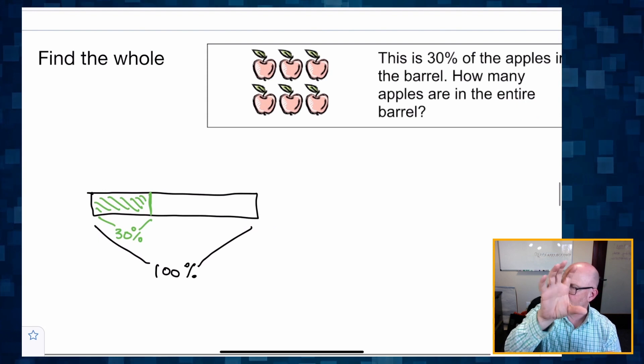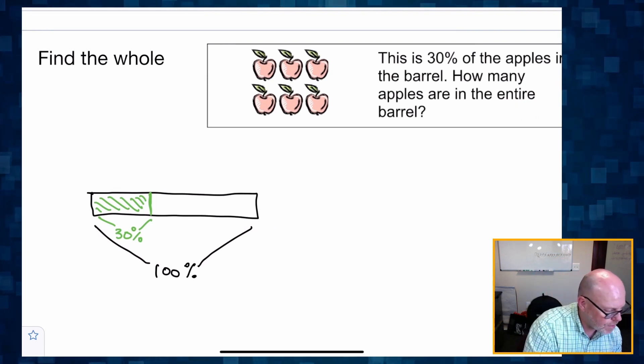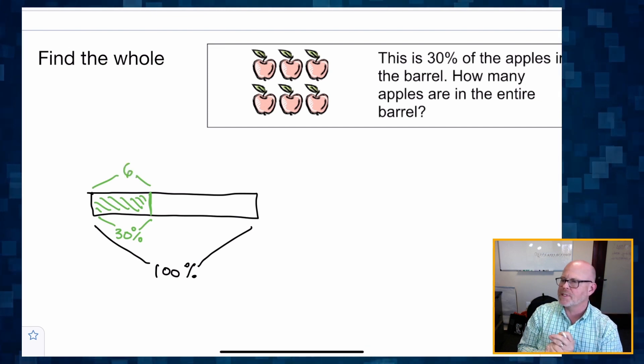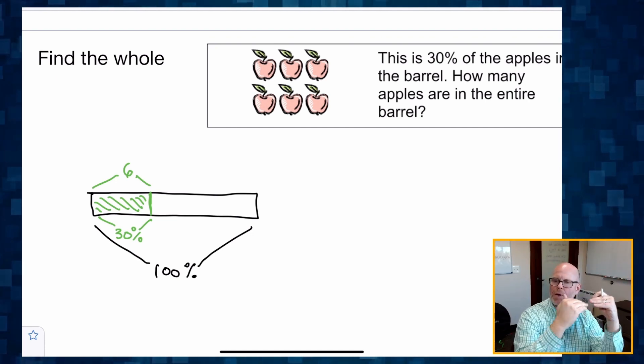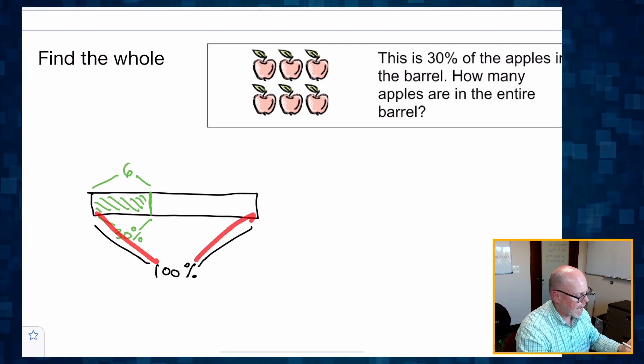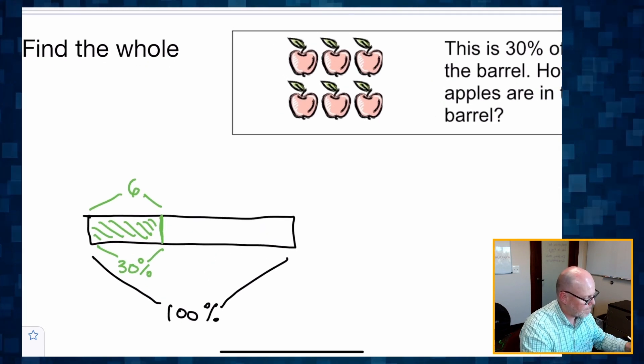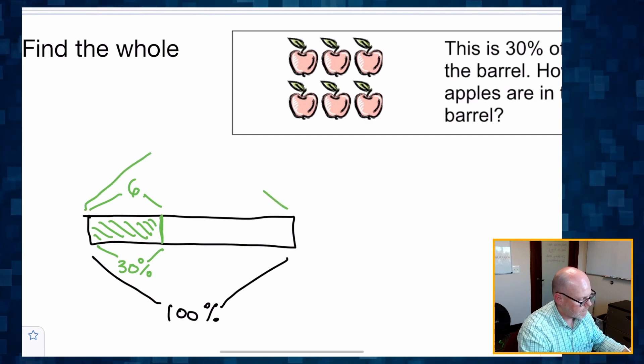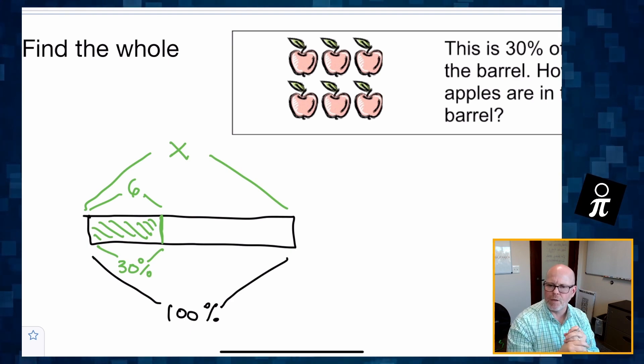And we're told that those six apples represents 30%. So those six apples represent 30%. And if those six apples represent 30%, do we have any idea how many apples represent the 100%? Not at this point.